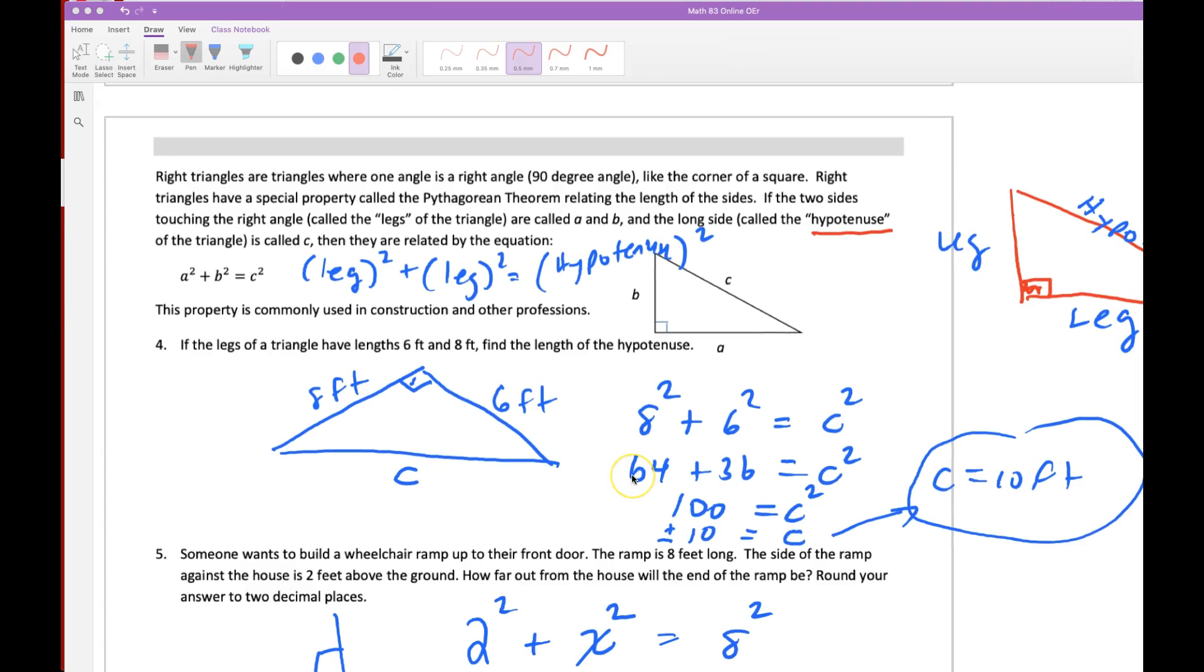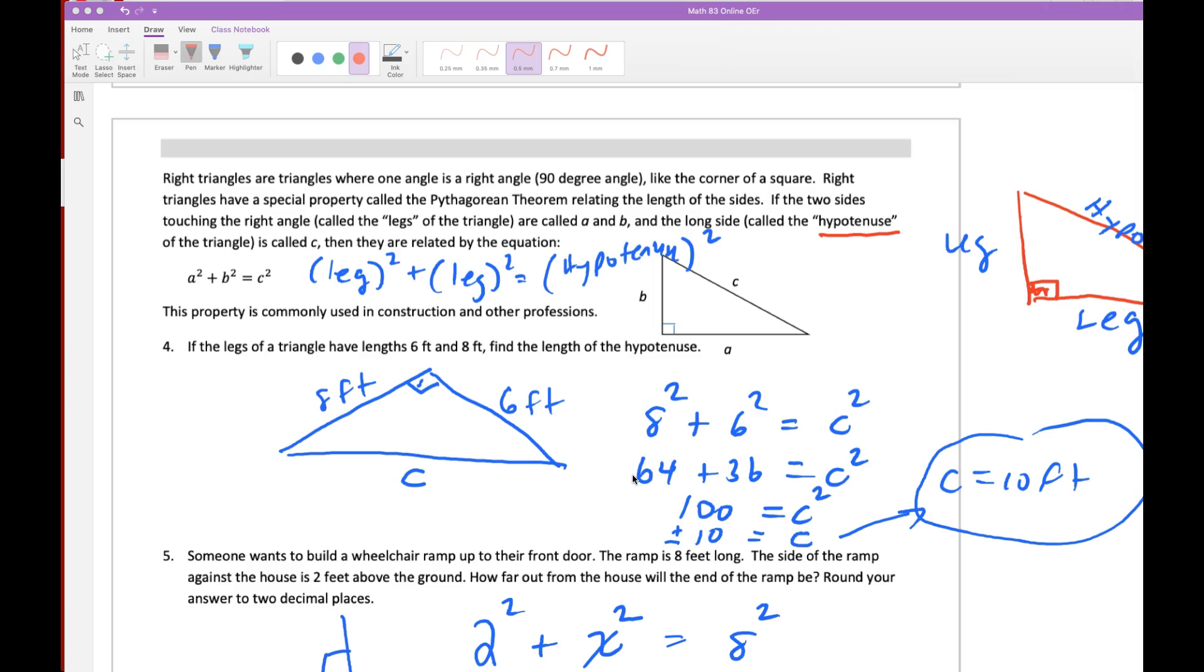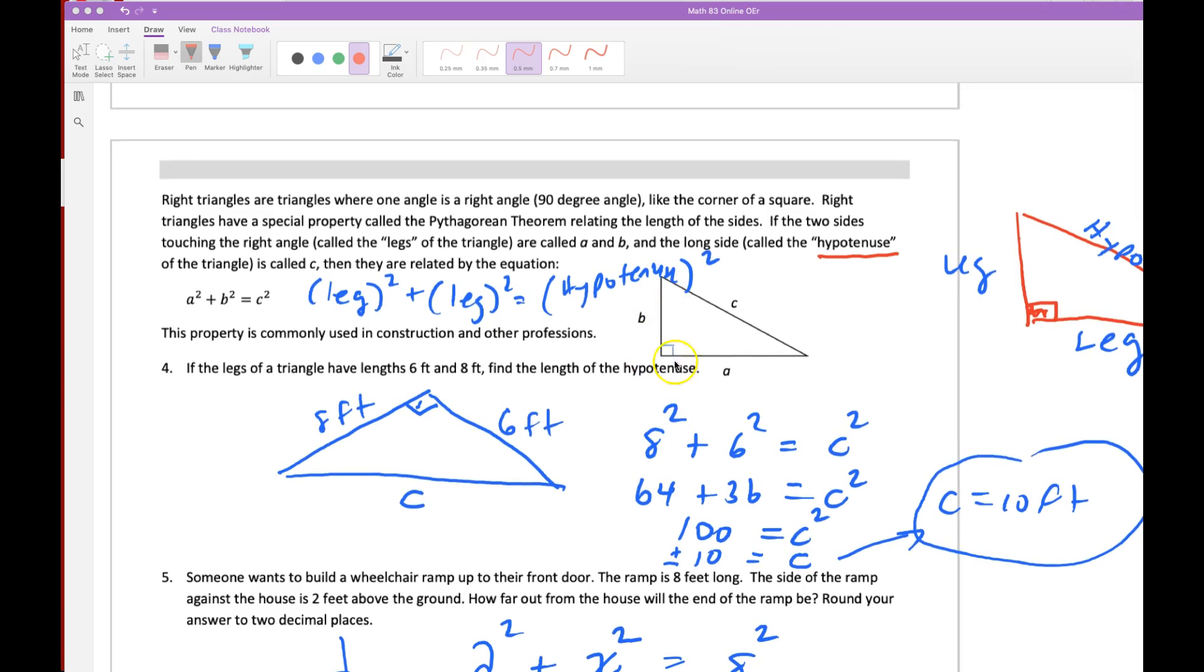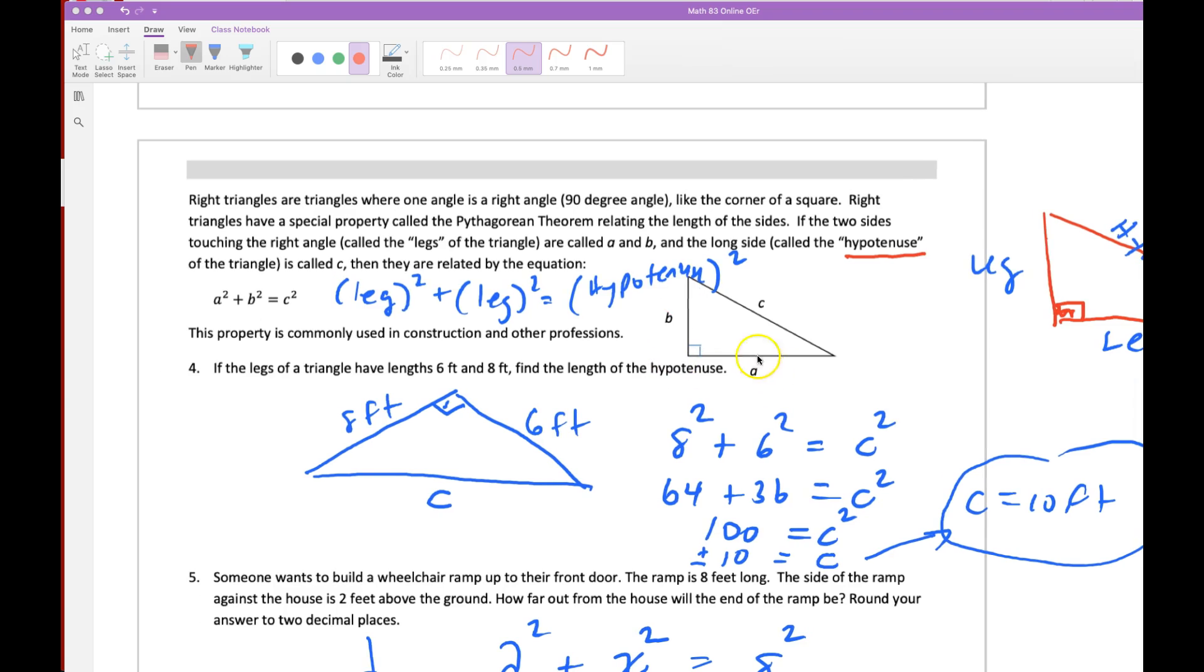A third type of quadratic equation we solve is called Pythagorean's Theorem, and that is used to find the lengths of different triangles, specifically right triangles. The classic formula most students remember is a squared equals b squared plus c squared, but that really doesn't mean anything.